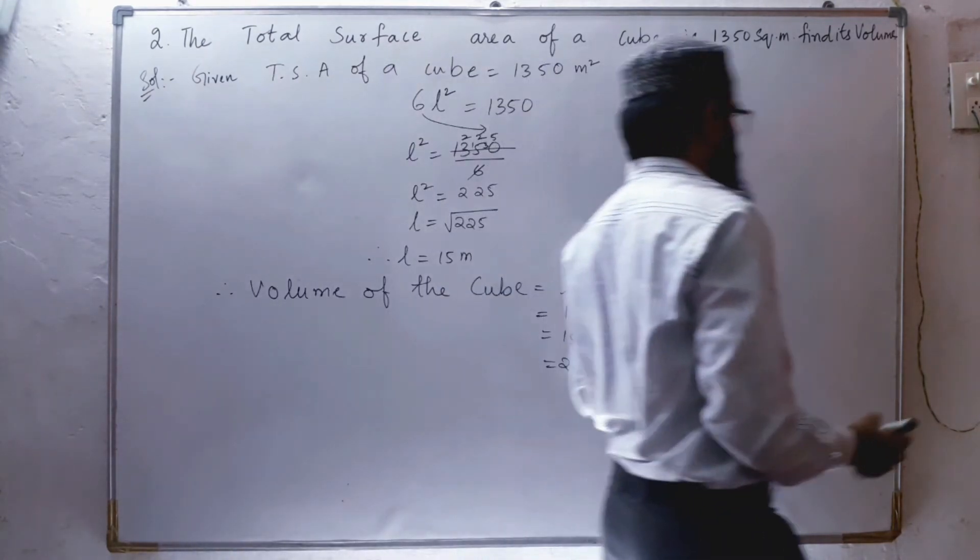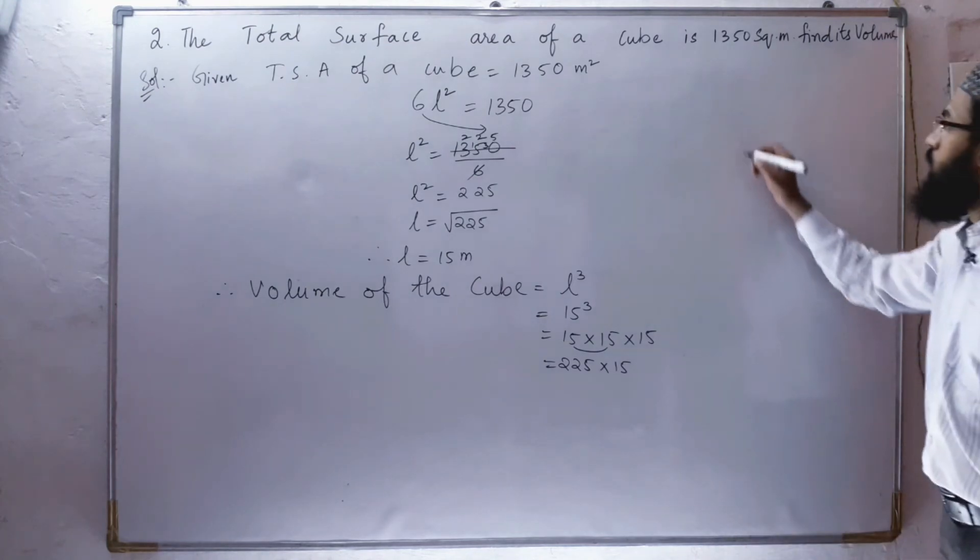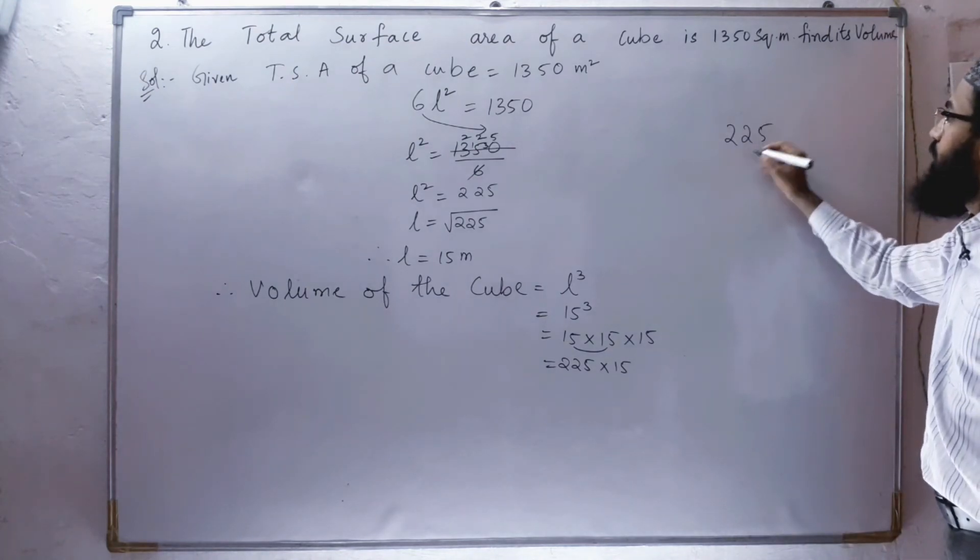225 into 15 we have to multiply. So 225 into 15.